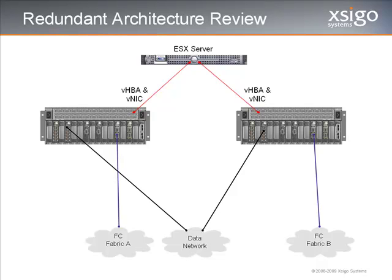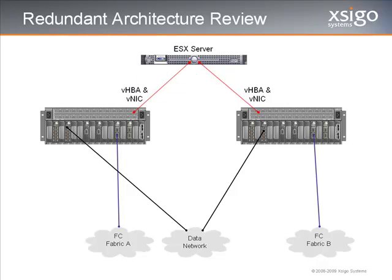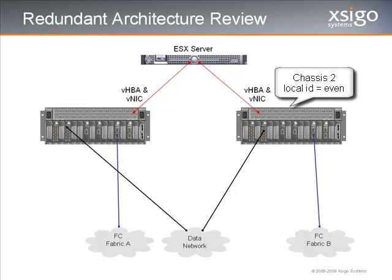One final note about ESX hosts: remember when configuring virtual resources across multiple chassis that the local ID must be unique for a given ESX host. Review other online training presentations or product documentation for a complete discussion of the local ID setting. A simple hint to help manage this is to use odd local IDs for chassis number one and even local IDs for chassis number two.